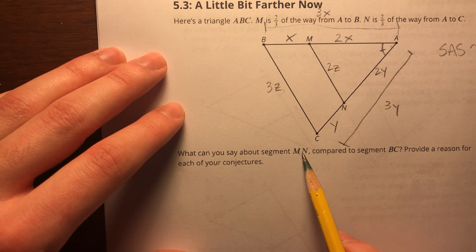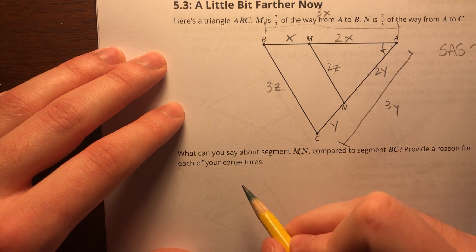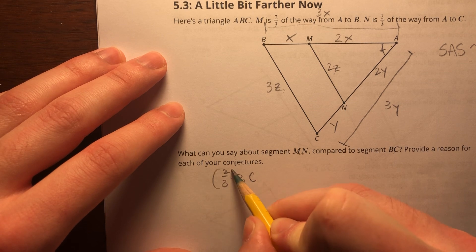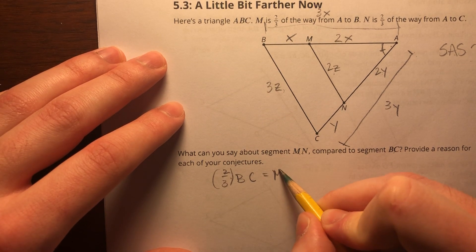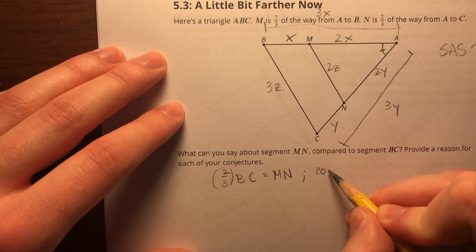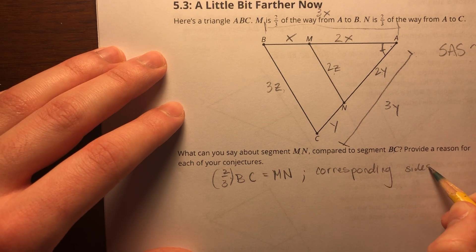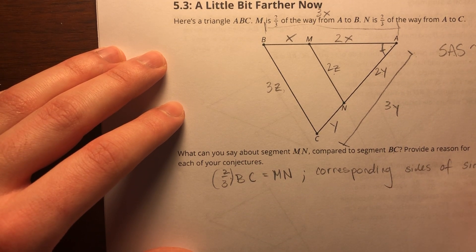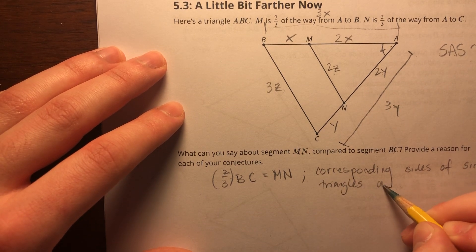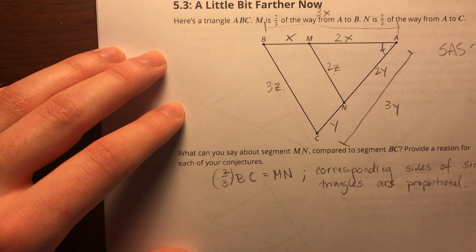So what can we say about segment MN compared to segment BC? Well, if I take BC and I multiply it by two-thirds, I'm going to get MN. Why is that? Corresponding sides of similar triangles are proportional.